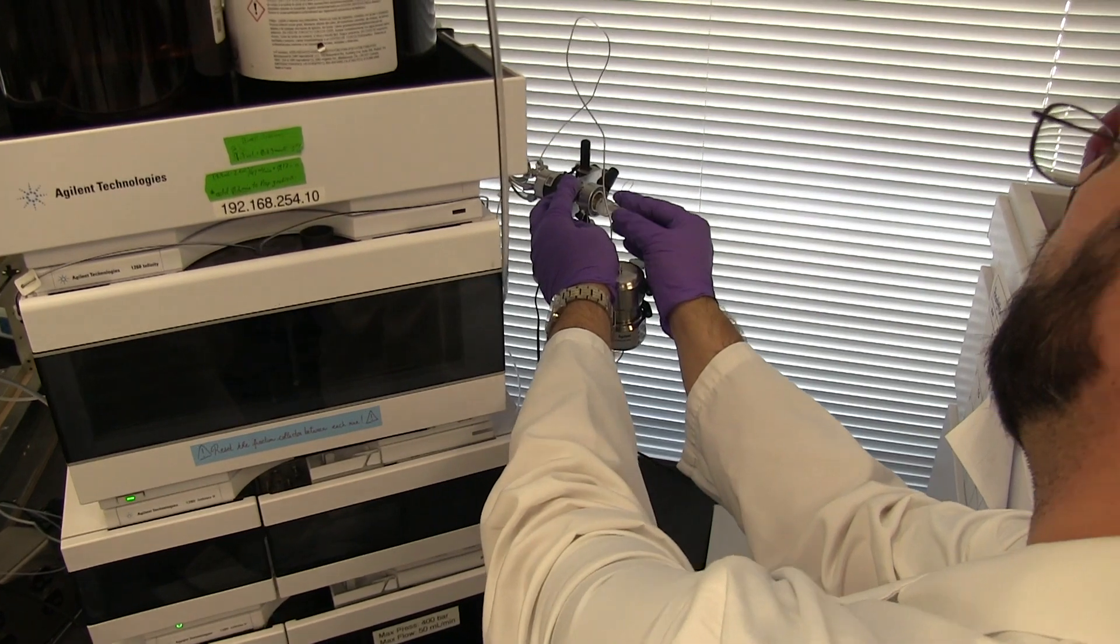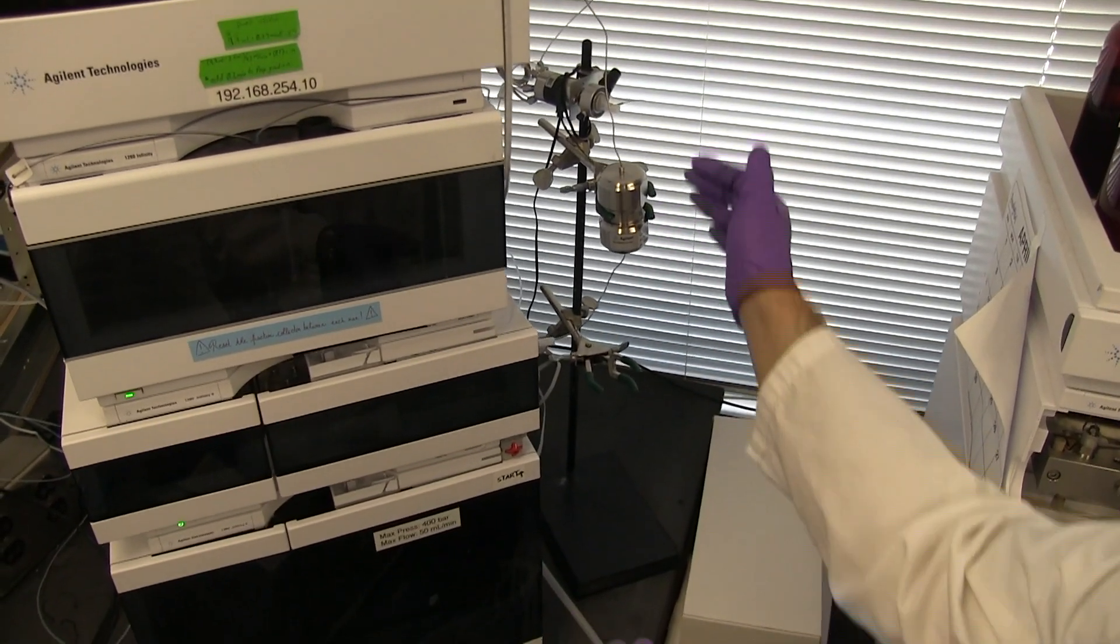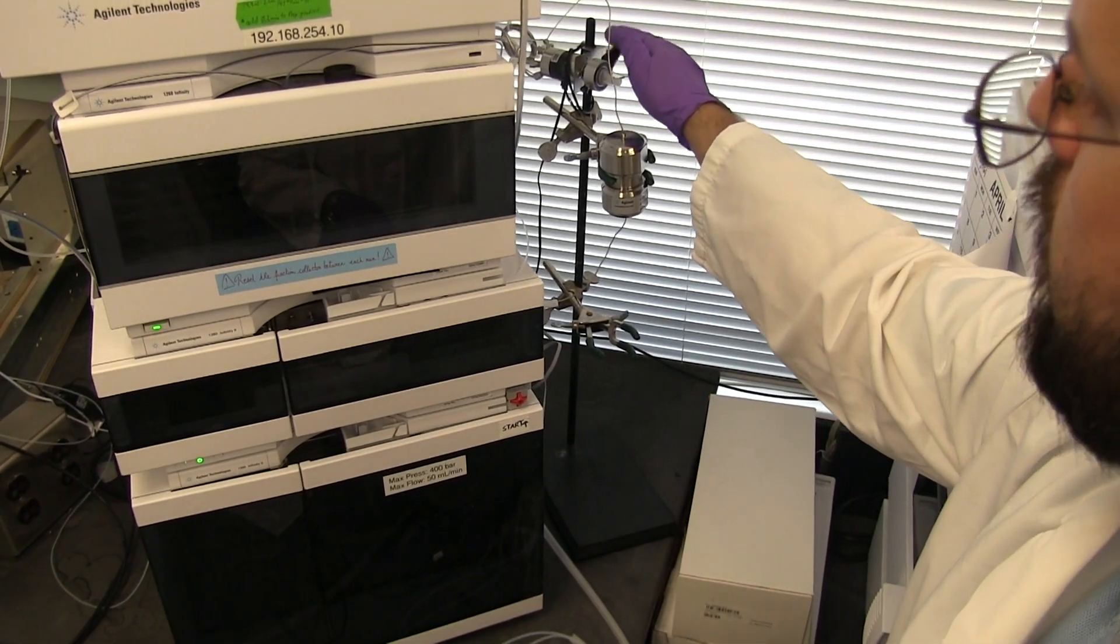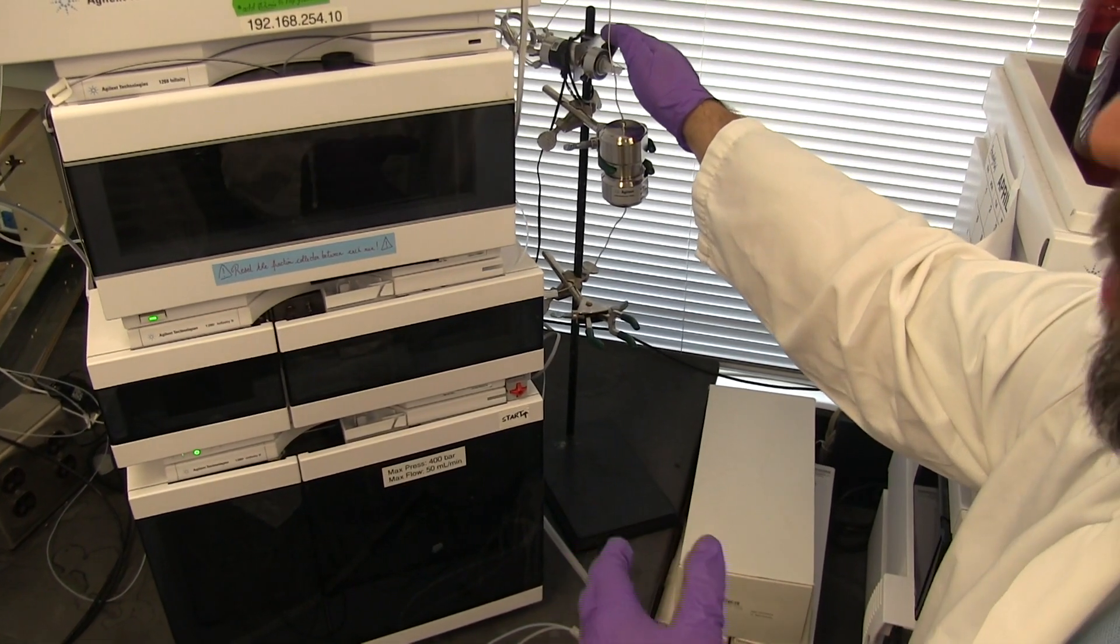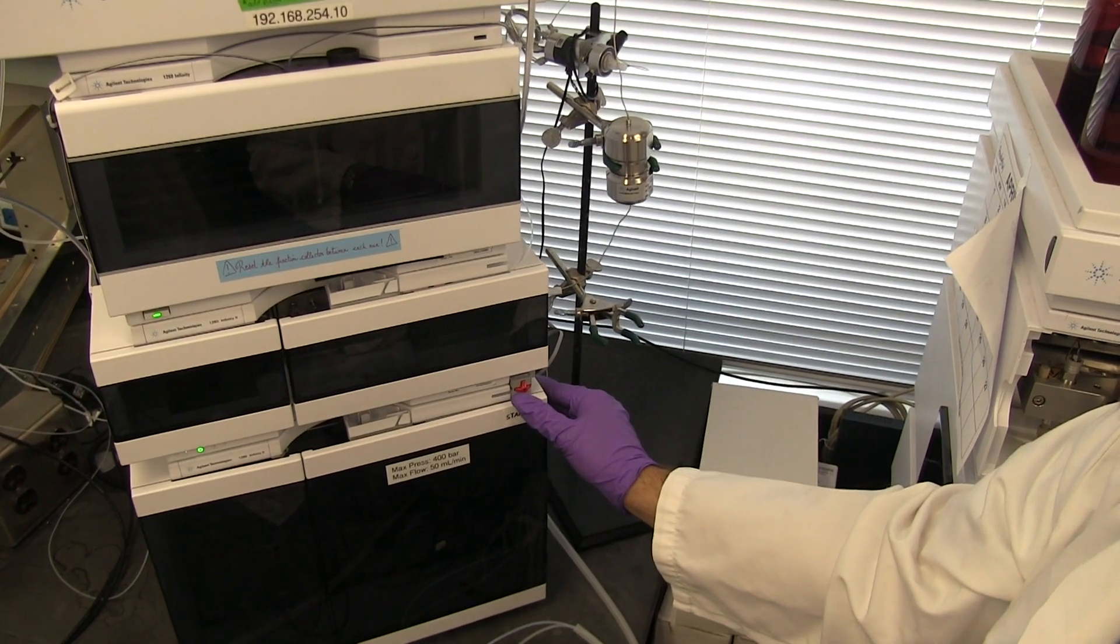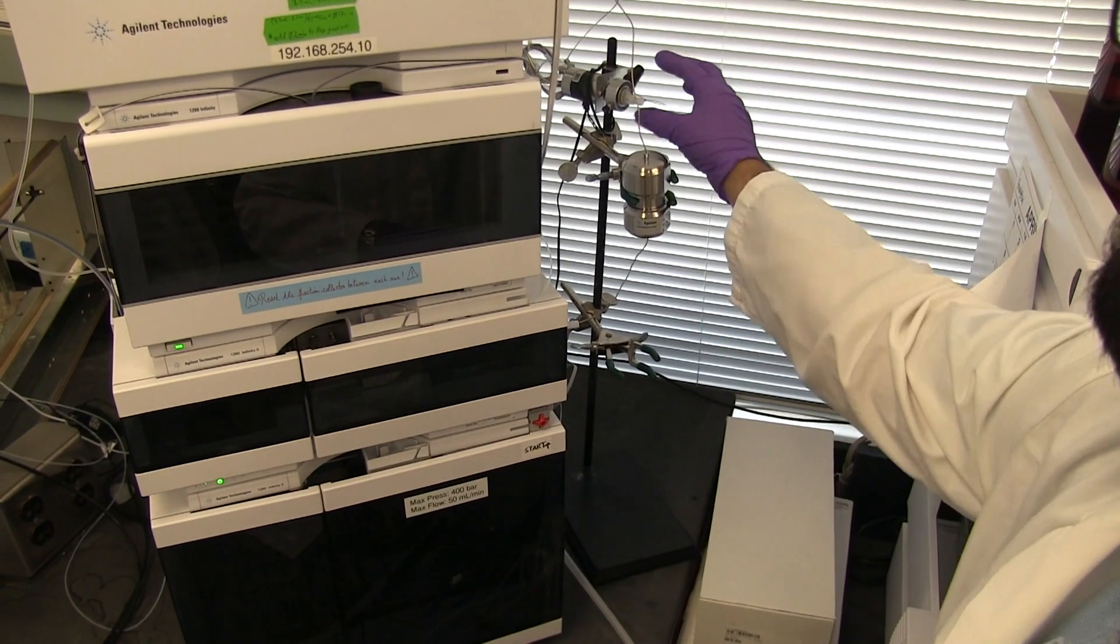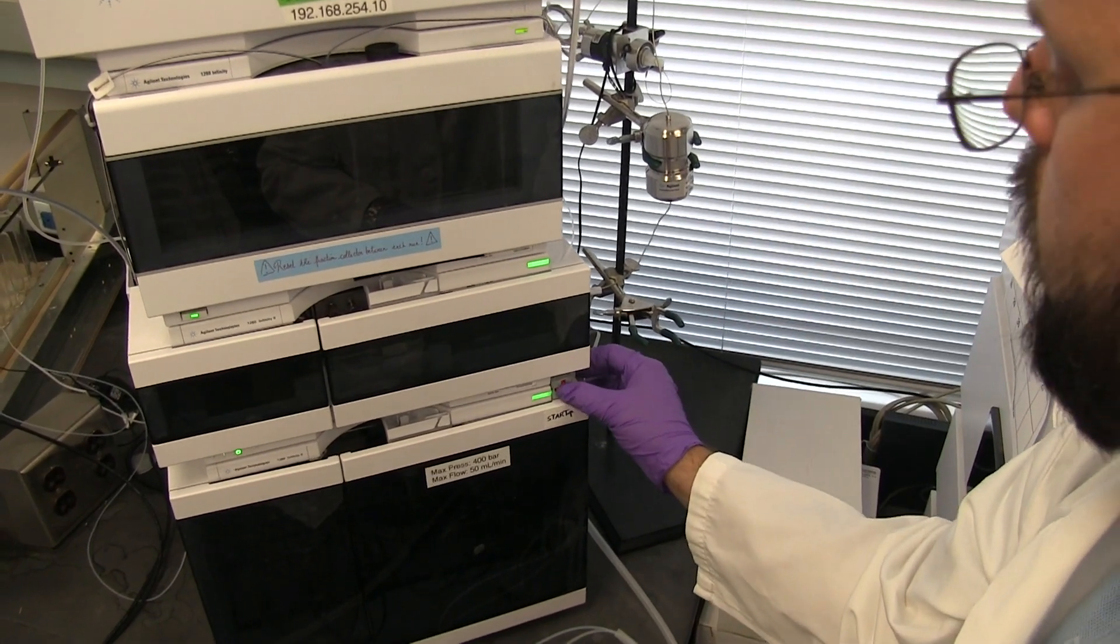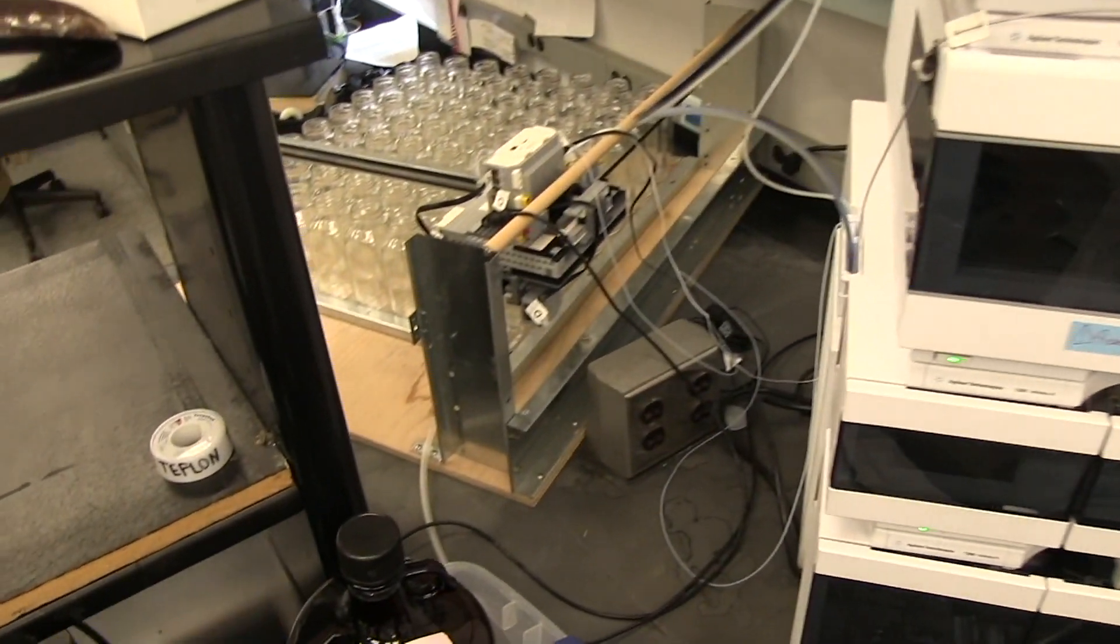The HPLC software is waiting for the manual injector to start the run so you have plenty of time for this step. And then we throw the lever from load to inject to begin the run. Then we would push the start button on the fraction collector. So flipping the lever from load to run begins the HPLC run and then we press the start button on the fraction collector.